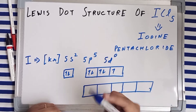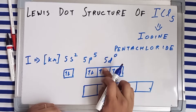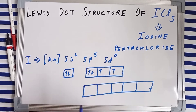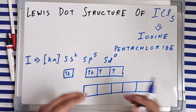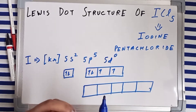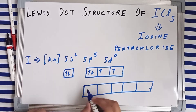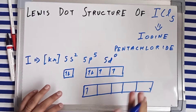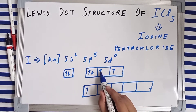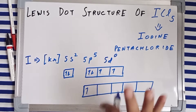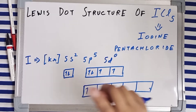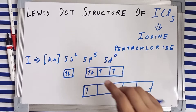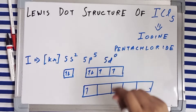In the first excited state, one of the electrons from one of the orbitals of the 5p subshell jumps and sits in one of the orbitals of the 5d subshell. Now you've got three unpaired electrons — one, two, three — which means that in the first excited state, iodine can make three covalent bonds.